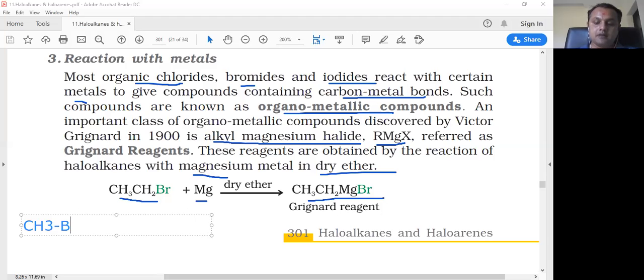Another example: CH3Br plus Mg in the presence of dry ether gives the product CH3MgBr, methyl magnesium bromide.